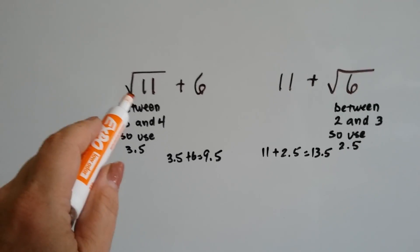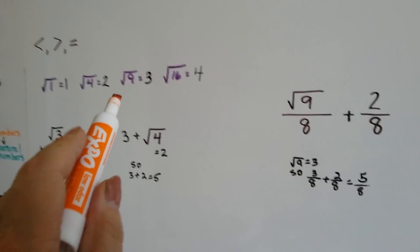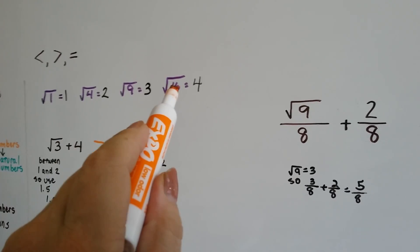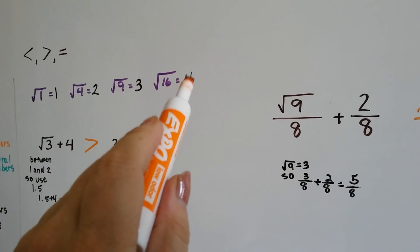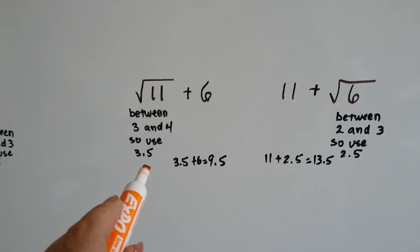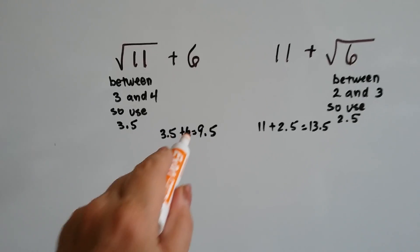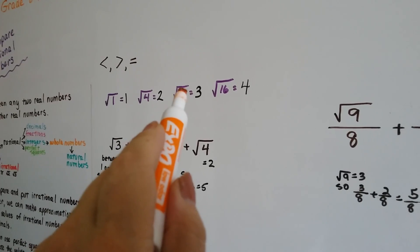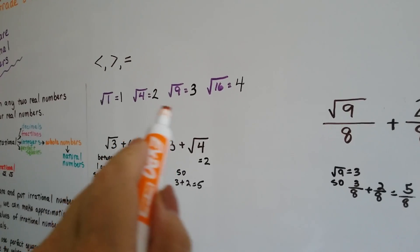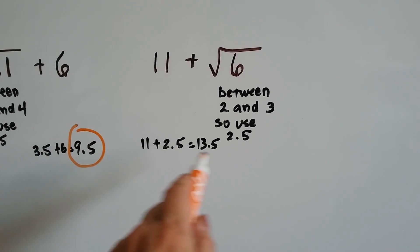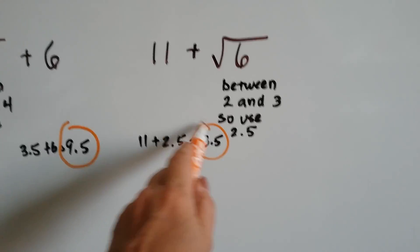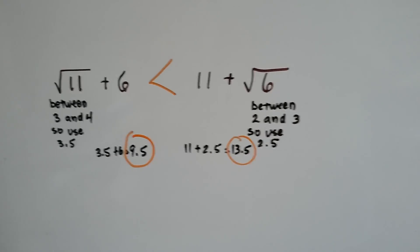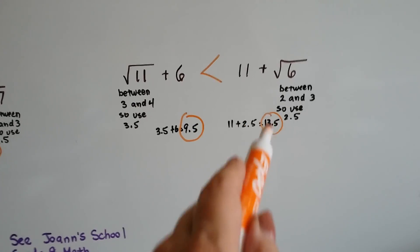The square root of 11 plus 6: the square root of 11 is between the square root of 9 and the square root of 16, so it's between 3 and 4 — we'll use 3.5. 3.5 plus 6 is 9.5. On the other side, 11 plus the square root of 6: the square root of 6 is between the square root of 4 and the square root of 9, so we use 2.5. 11 plus 2.5 is 13.5, so the right side is greater — 9.5 is less than 13.5.